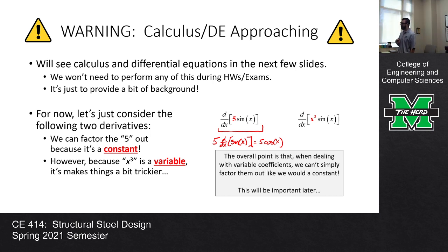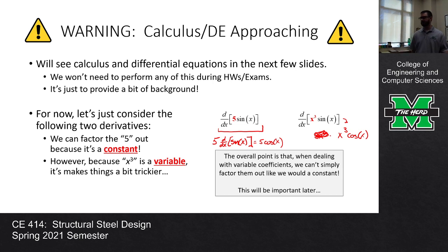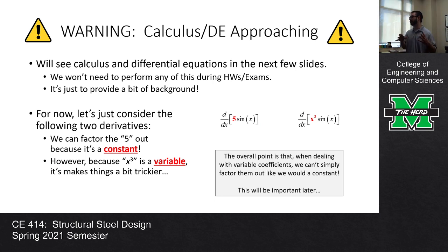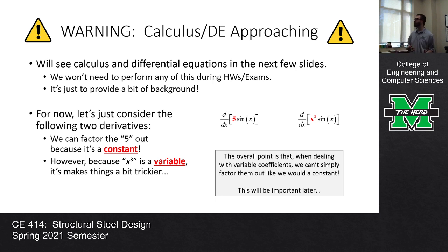Now, is the derivative of X cubed times sine of X the same approach? No — product rule. Another way to state it: the five is a constant, and the constant rule says the derivative of a constant times a function is the constant times the derivative of that function. But you cannot do that if the coefficient is a variable like X cubed. You have to use the product rule.